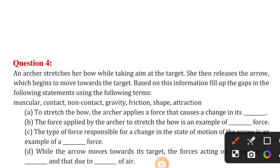Third is the type of force responsible for the change in the state of motion of an arrow is an example of dash force. The type of force which is the change in the state of motion, which example is our muscular force.